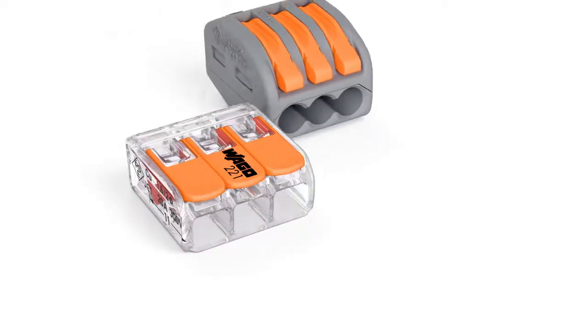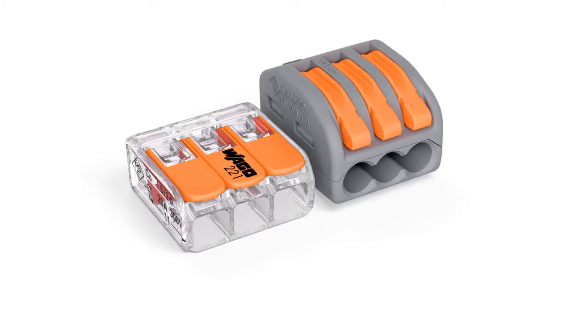Wago's 221 series compact splicing connector for all conductor types saves 40% more space than its predecessor thanks to a significant reduction in size. This makes connections possible, even in the smallest, most difficult to access installations.